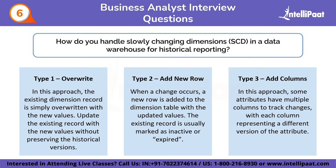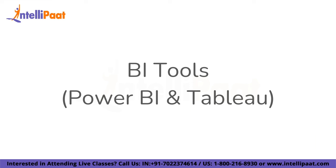The sixth question is: how do you handle slowly changing dimensions or SCDs in a data warehouse for historical reporting? There are three types: Type 1 — Override, where the existing dimension record is overwritten with new values without preserving historical versions; Type 2 — Add New Row, where a new row is added with updated values and the existing record is marked inactive or expired; and Type 3 — Add Columns, where some attributes have multiple columns to track different versions of the attribute.